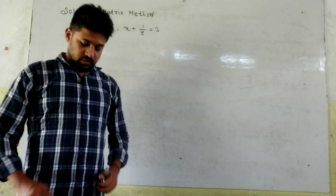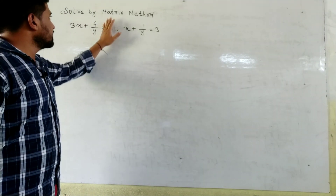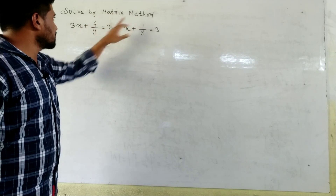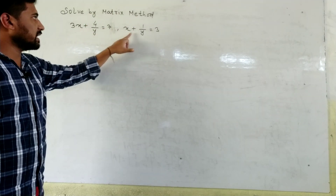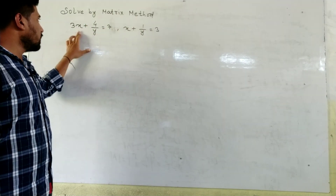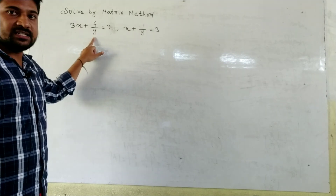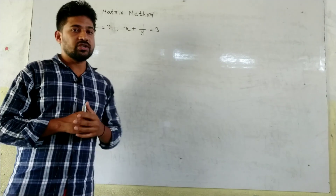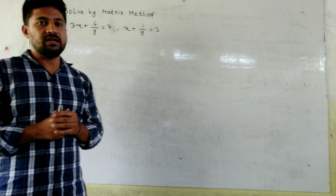Hello listeners. Today we have a question related with matrix — solve by matrix method. The equations are: 3x plus 4 over y is equal to 7, and x plus 1 over y is equal to 3. Note that 1 is in the numerator and y is in the denominator. Let us watch how to solve this equation by matrix method.